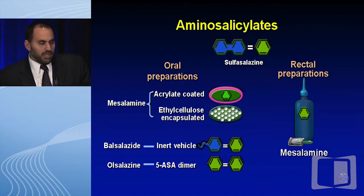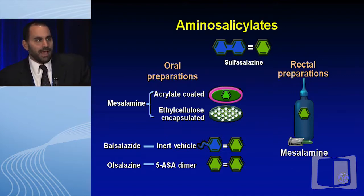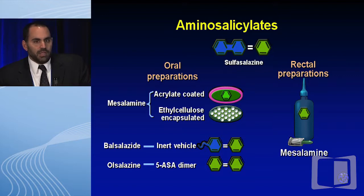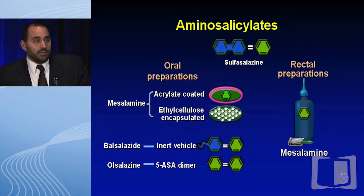Starting with aminosalicylates, we should remind ourselves that sulfasalazine is really the pro-drug of this class. It was used by rheumatologist Anna Schwartz in the 50s, and she found that her arthritis patients who had underlying colitis improved when given sulfasalazine. The active component was 5-ASA, and the products we're using now are all derivatives of sulfasalazine to limit side effects. We have a number of different oral preparations, as well as topical agents.